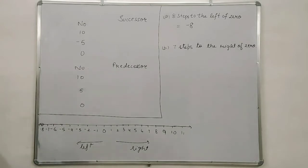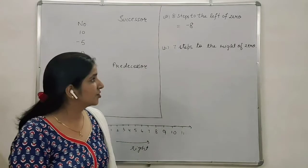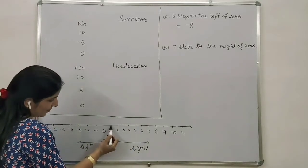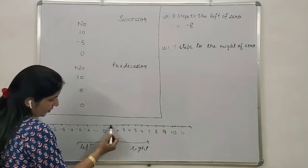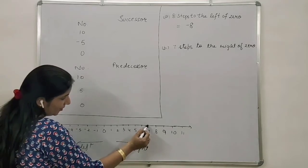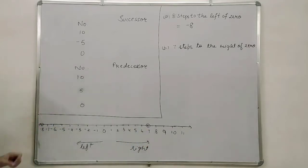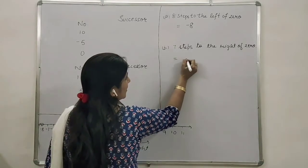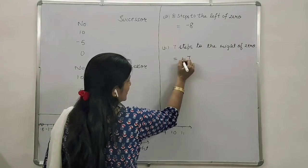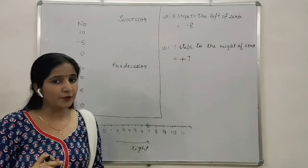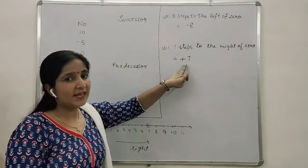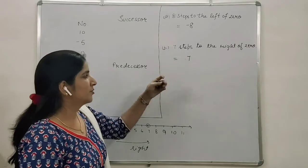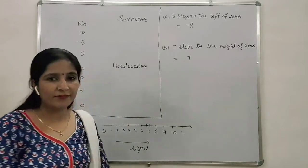The next is 7 steps to the right of zero. If we move 7 steps to the right, we can start counting from just after the zero: 1, 2, 3, 4, 5, 6, 7. On the 7th step, we will reach here on 7. So, the answer will be 7. Or you can write plus 7 to show it is positive. But if no sign is in front of a number, it means that it is positive. So, you can write 7 like this also.